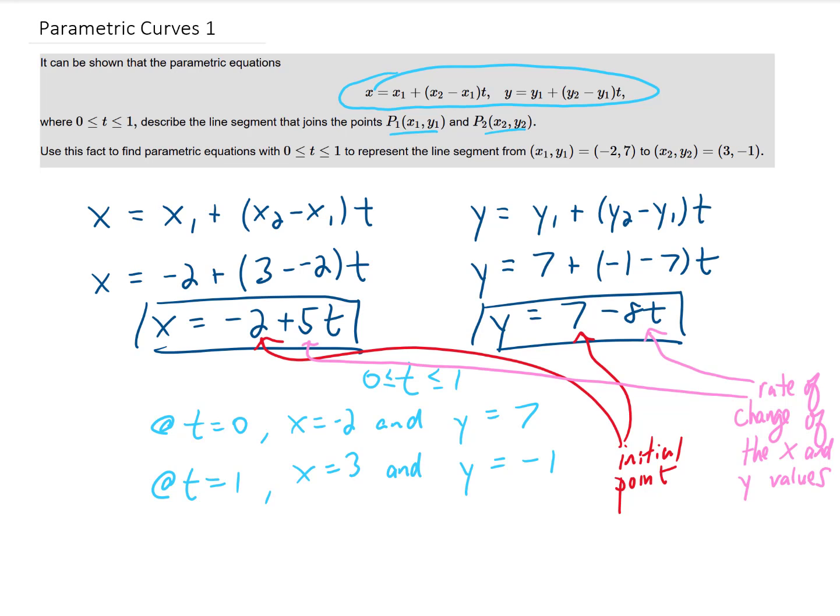Alright, now if we want the line that connects those two points that goes infinitely in both directions, all we have to do is say that t can go from negative infinity to infinity. Or you would say t is any real number. So this is not just how you parameterize a line segment, it's also how you parameterize the entire line, and you just need two points to do it.